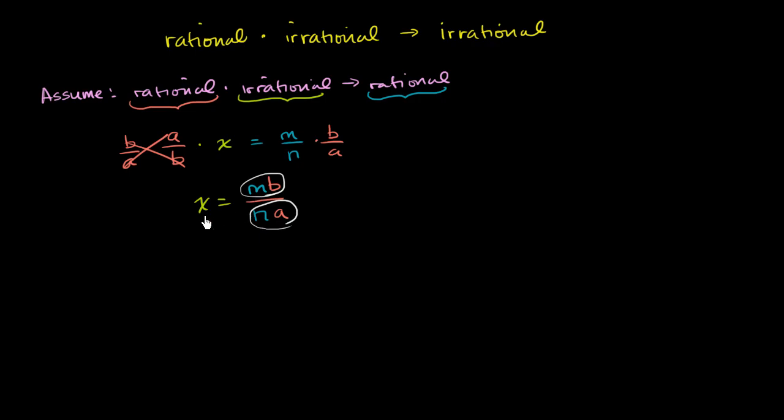I've just expressed what we assumed to be an irrational number as the ratio of two integers. So now we have x must be rational. And that is our contradiction because we assumed that x is irrational.